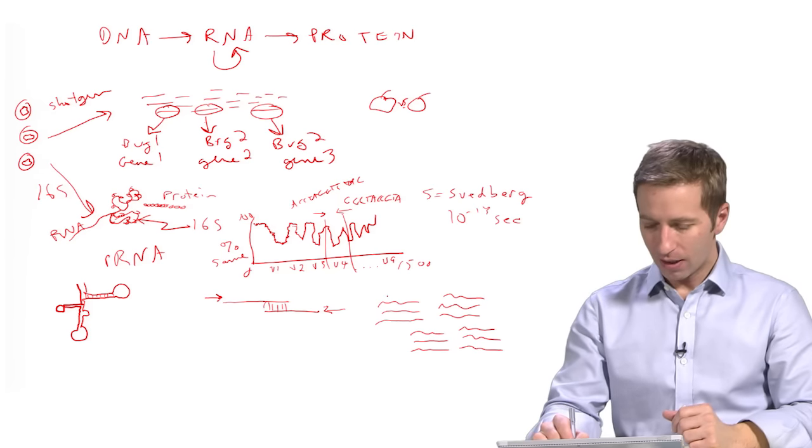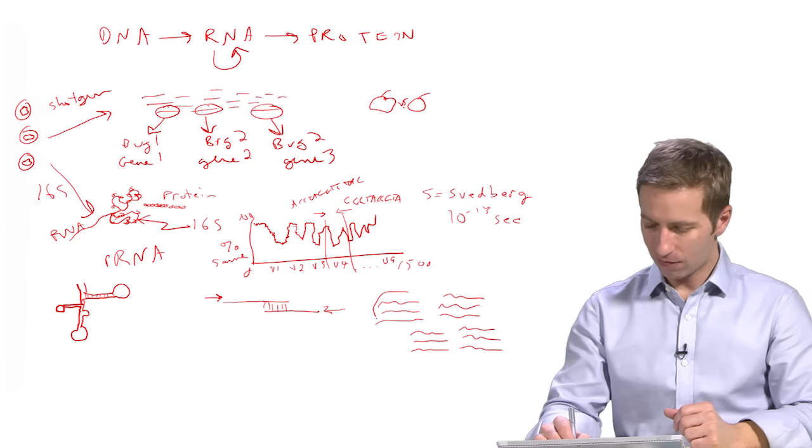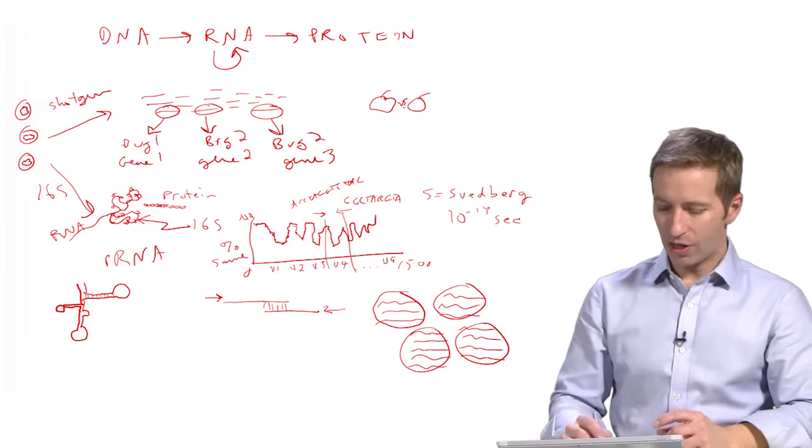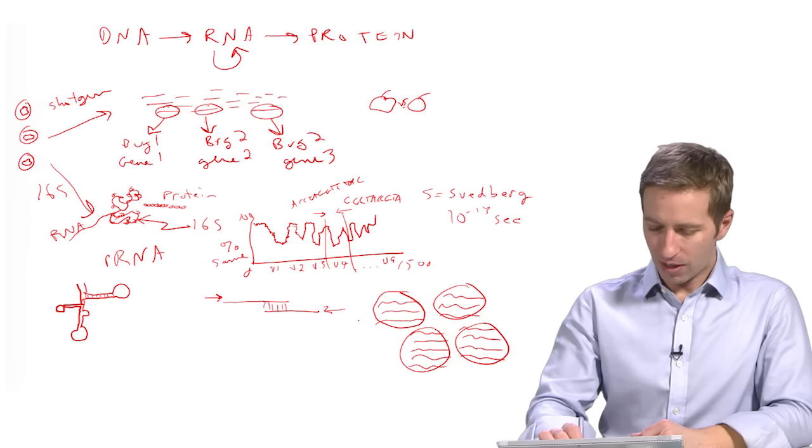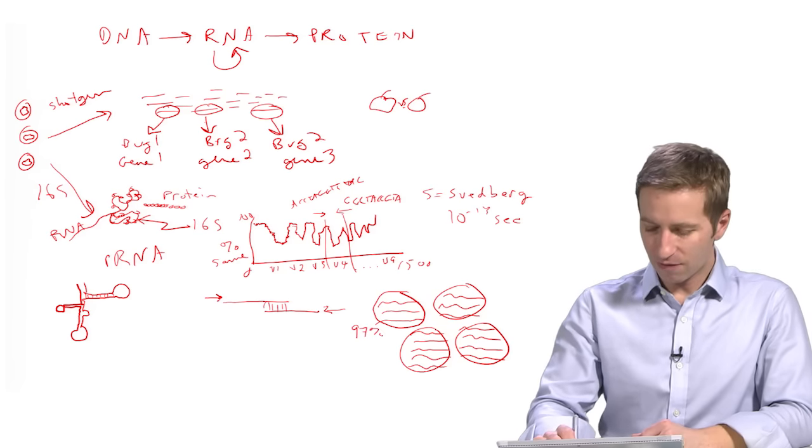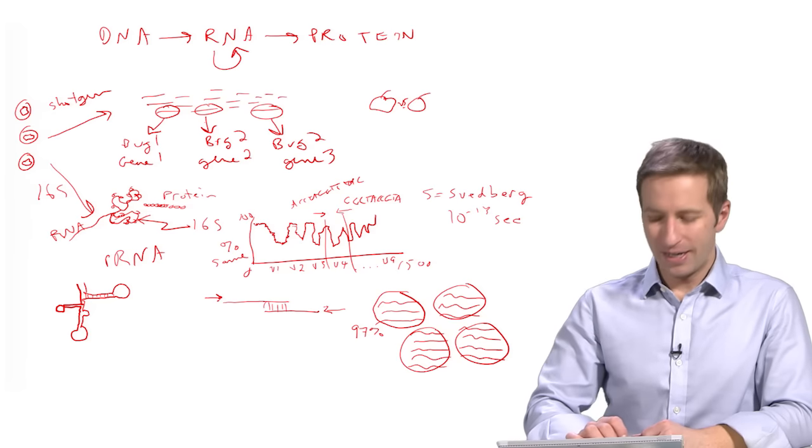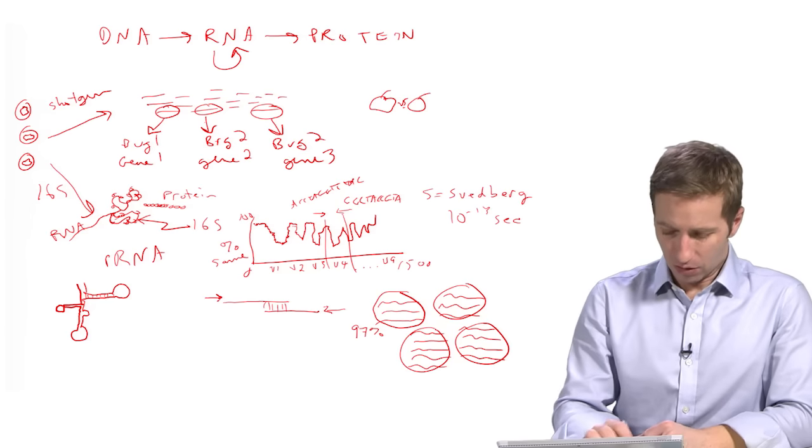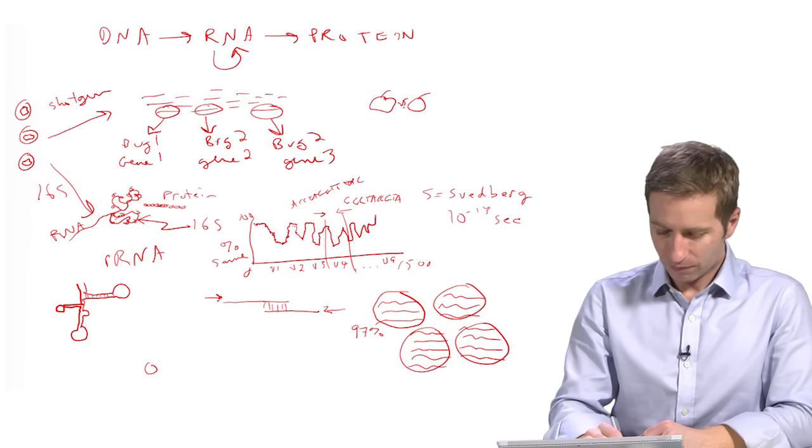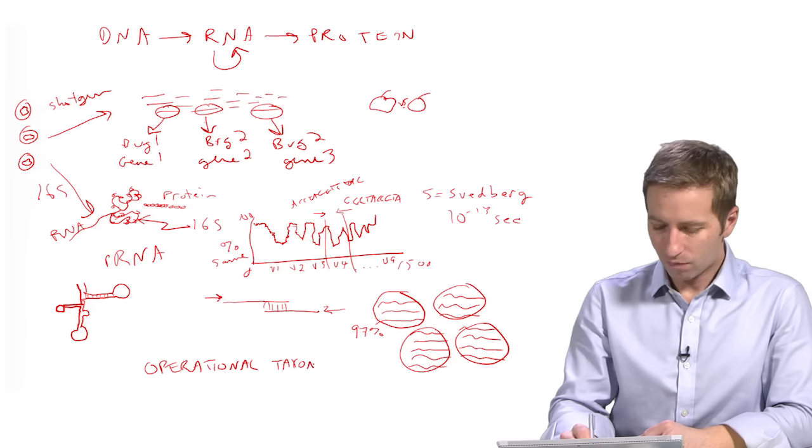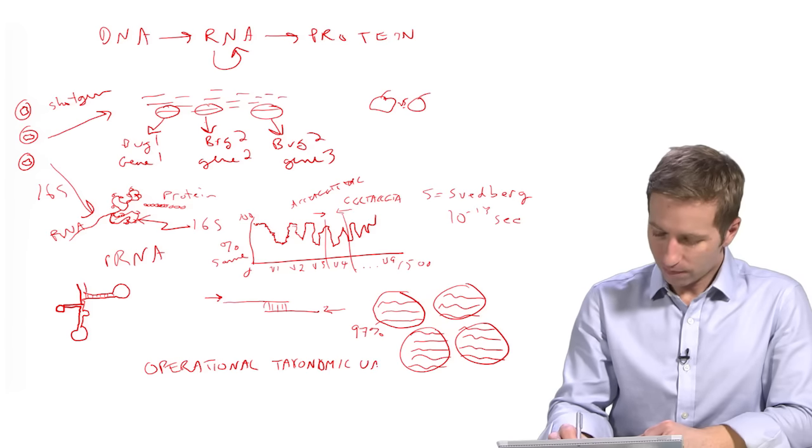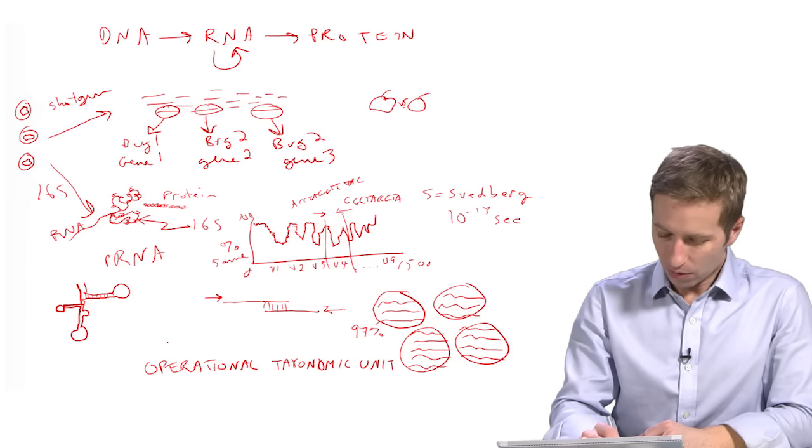So usually what we do is we will cluster or bin these sequences together according to similarity. So we look for groups of them that are pretty similar to each other. The most common threshold that's used is 97% similarity within each cluster. Then we call each of these an OTU. So these are OTUs, stands for Operational Taxonomic Unit.